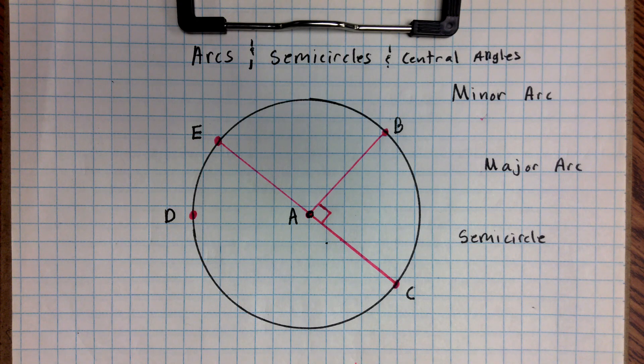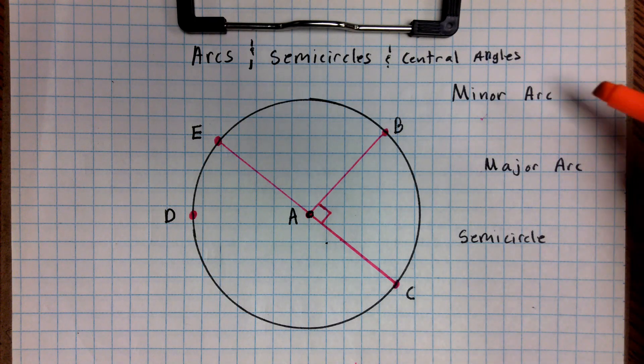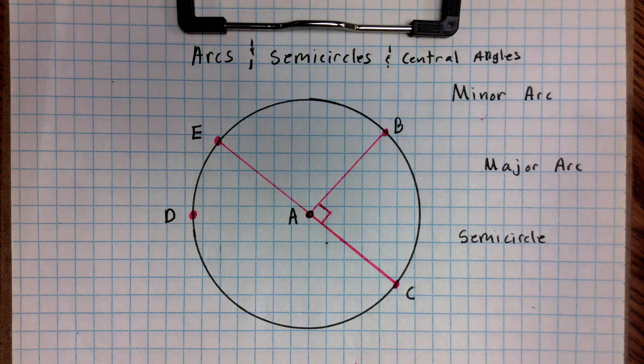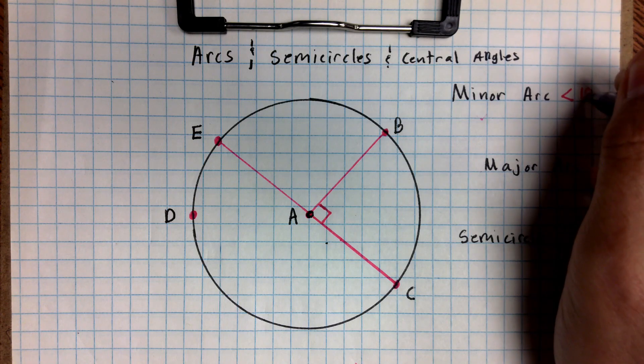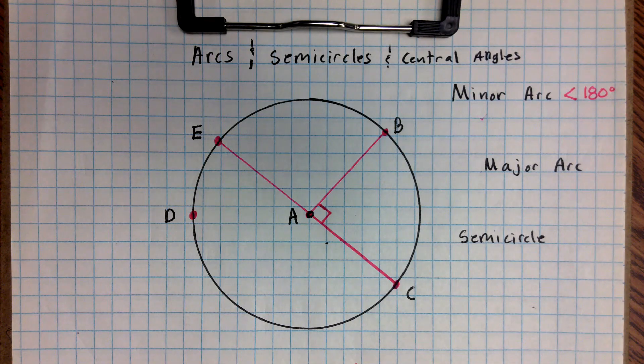So I just showed you what an arc looked like on the other circle. And now we're going to look at the arc on this one. So on this one, we have minor arcs and major arcs. So a minor arc is an arc that's going to be less than 180 degrees.